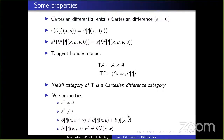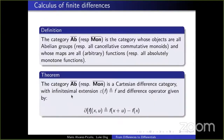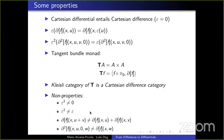Some important non-properties: if you know synthetic differential geometry, you might be tempted to say that epsilon squared must equal zero — this is not the case, and we have models where it isn't. You might also think epsilon must be idempotent — that is almost a theorem but not quite, and we have models where epsilon is not idempotent.